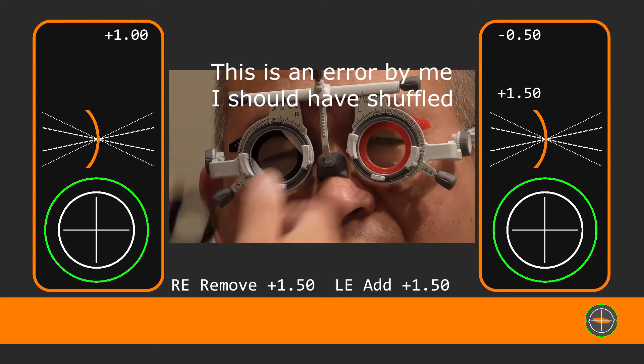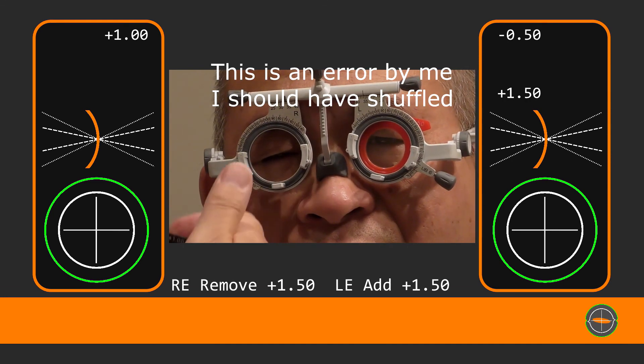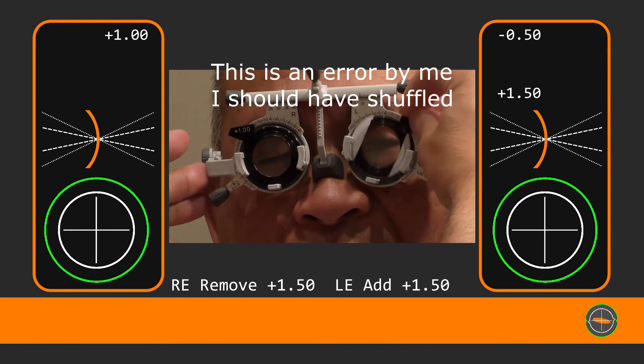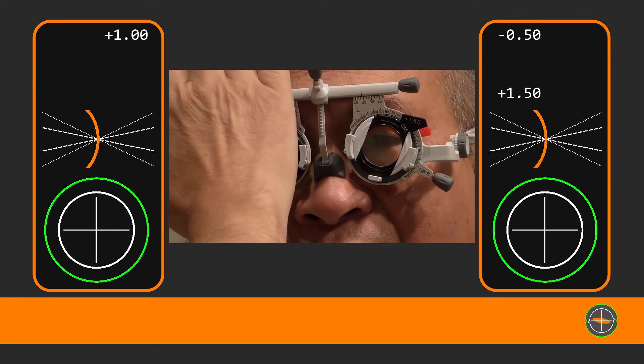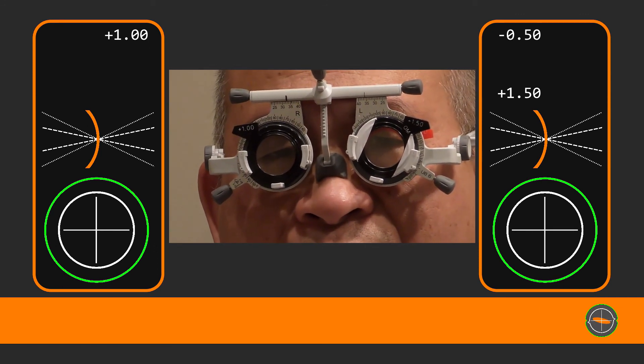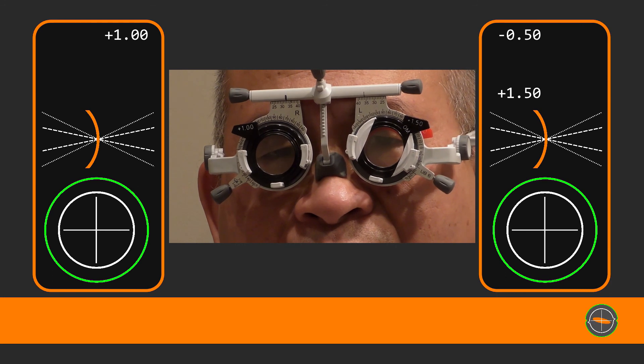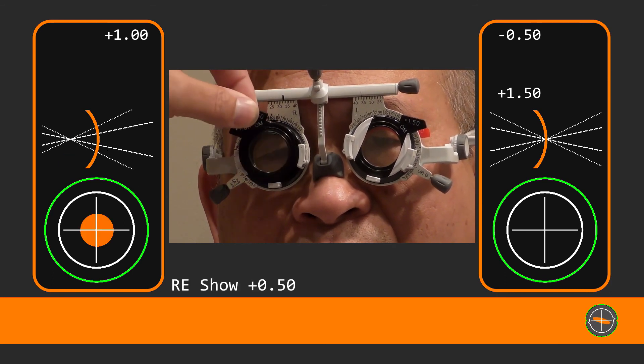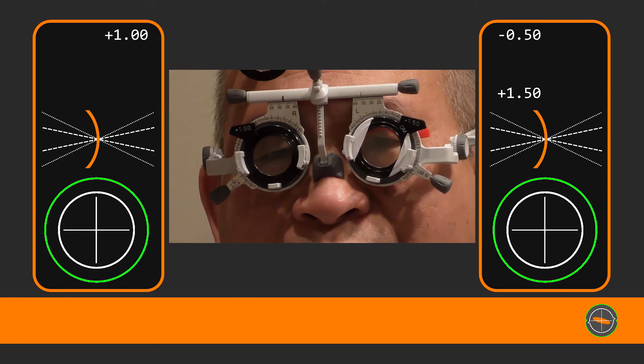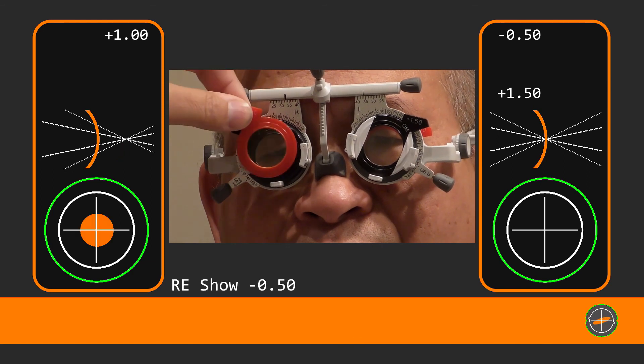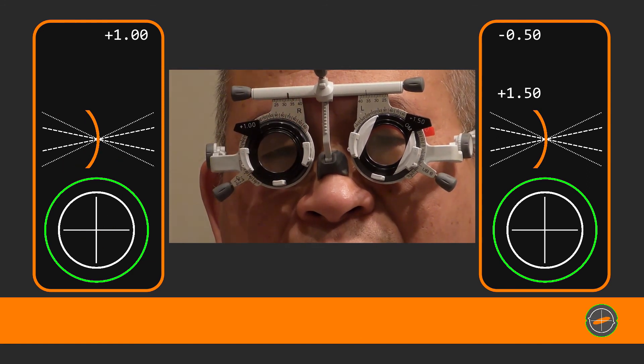So we'll just swap back over to the other eye now. And that's blurry there isn't it? And keep looking up there now. Better with this one or without. Without. And better with that one. Without.